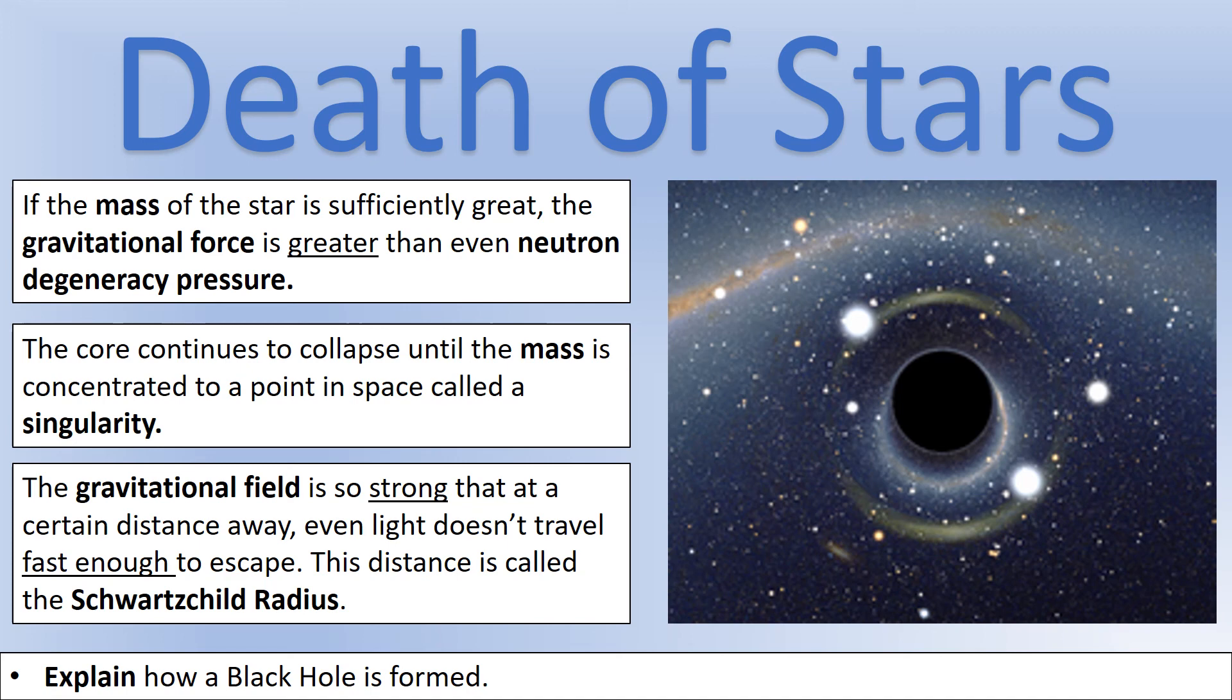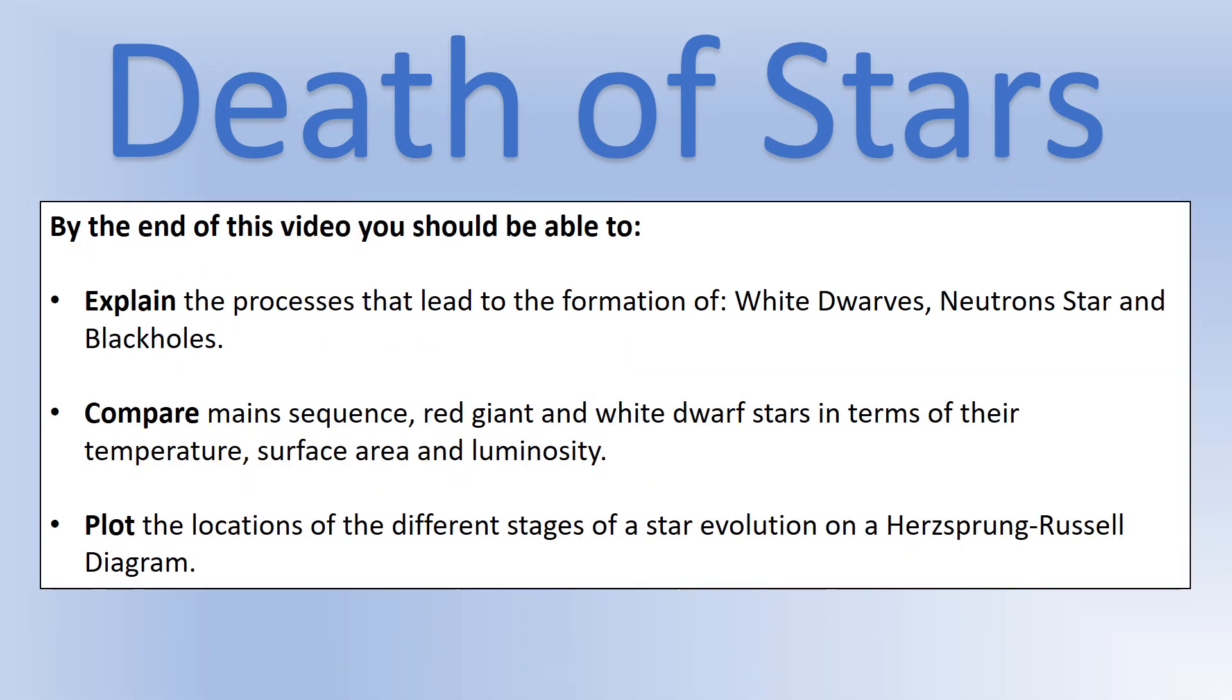So at this point, you should now be able to explain how we get white dwarfs, neutron stars and black holes. And you should, when I say explain, you should be able to talk about it in terms of the forces involved. So like gravity, electron degeneracy pressure, radiation pressure, those kind of things. You should be able to compare the different types of stars. So main sequence, red giant and white dwarf in terms of their temperature, surface area and luminosity. And you should also be able to plot the path of a star like the sun through a Hertzsprung-Russell diagram. So you should be able to sketch what one of those looks like and show what will happen to our sun in the form of on the diagram there.